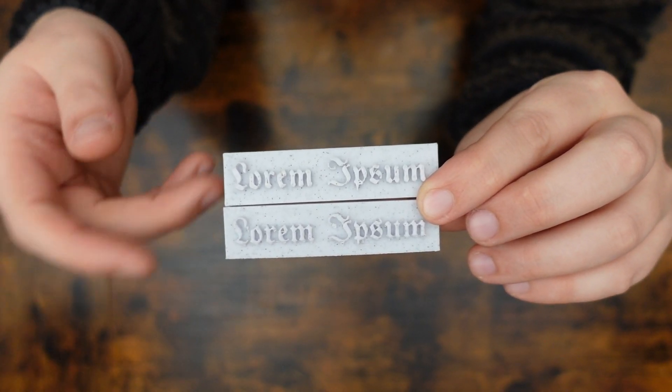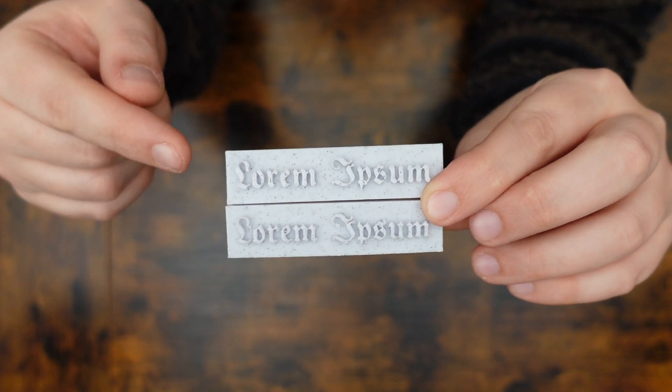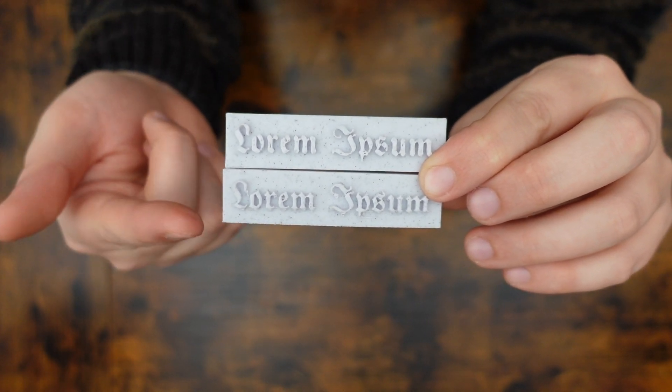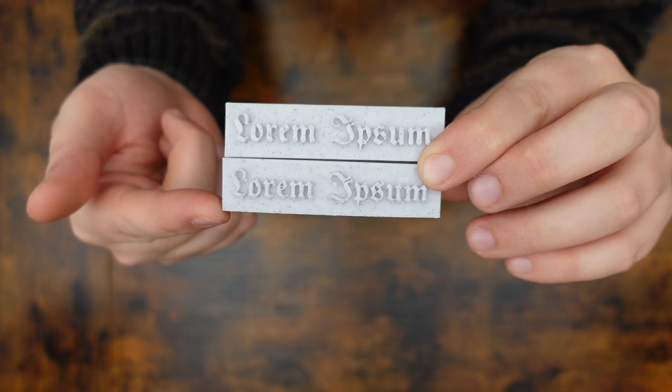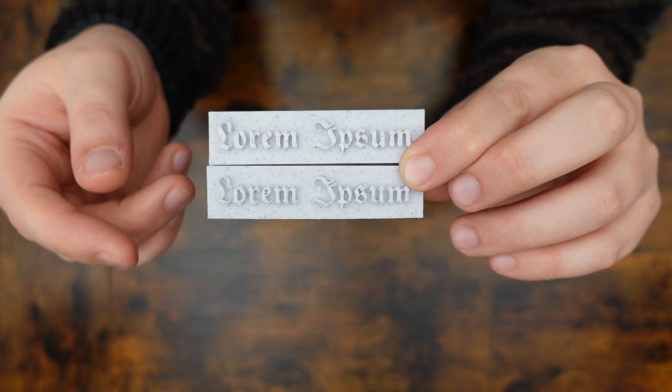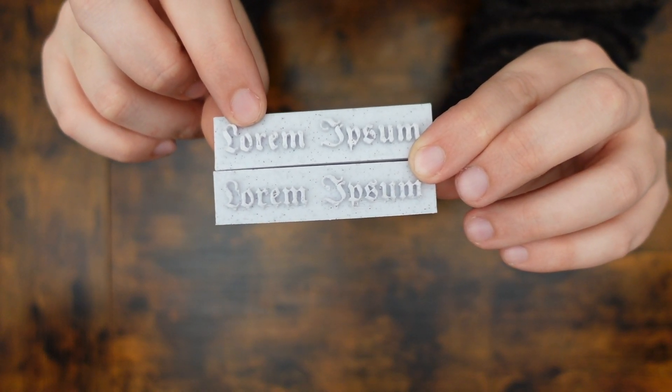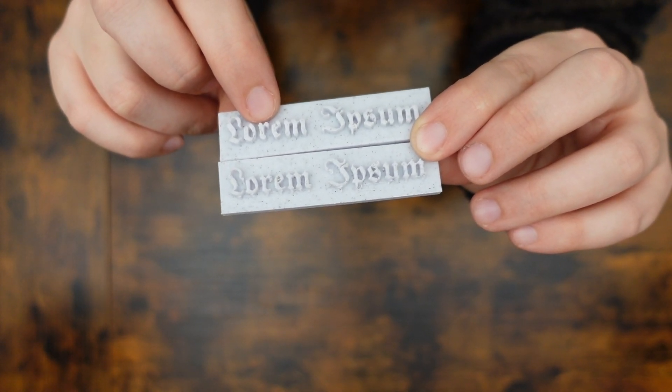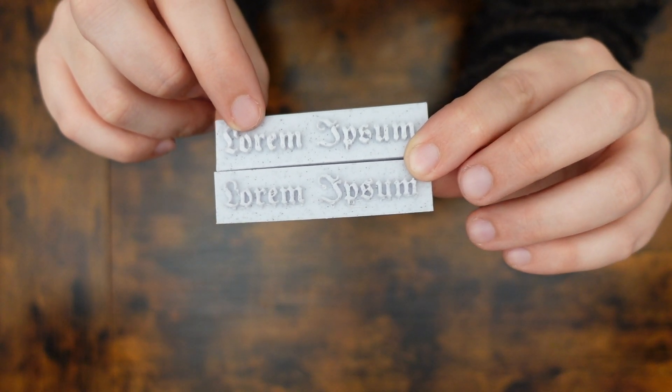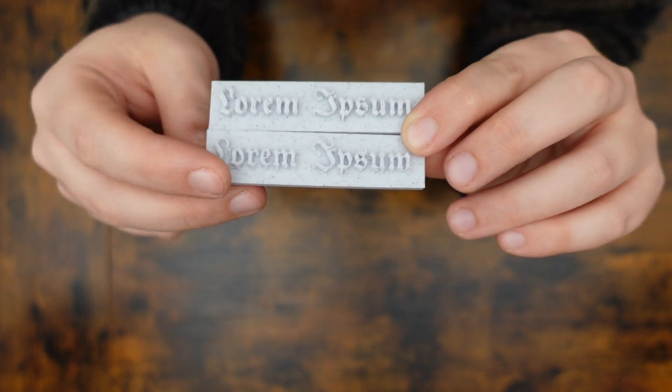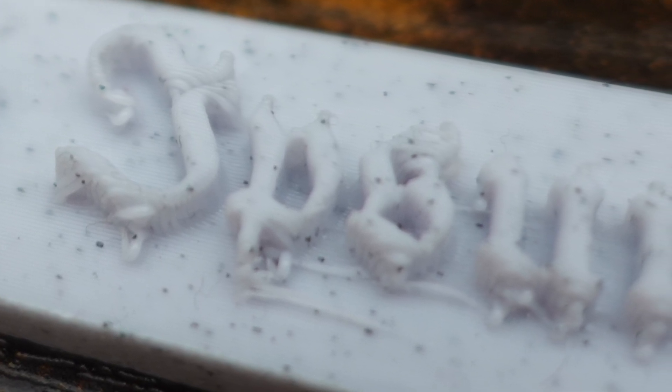Now let's look at some prints that seem to break the rules. This top print here was printed horizontally, while this bottom one was printed vertically. Both of these are pretty decent prints, actually, but if you look at the horizontally printed one, there are tiny holes in the R and in the O. They are very minor, but they are there.